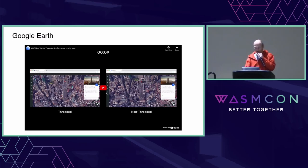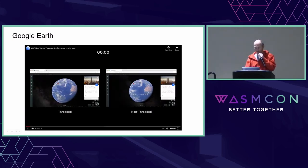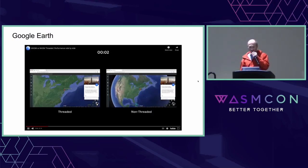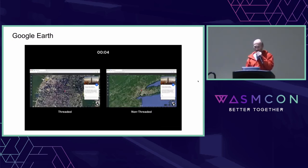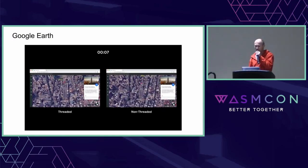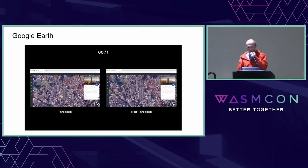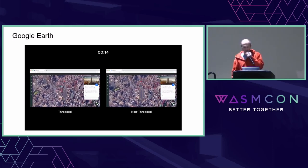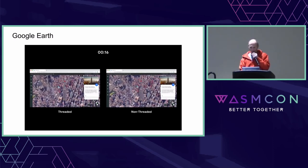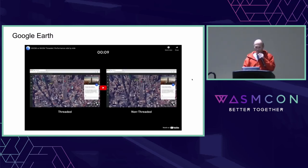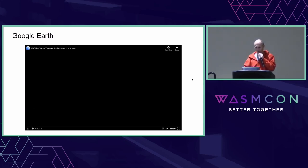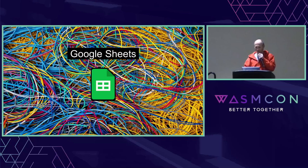A side-by-side comparison shows threaded on the left and non-threaded on the right. The threaded version works a lot better — the non-threaded one stutters and is slow with a bunch of dropped frames. So it's much less smooth than the threaded one. Google Earth was one of the first projects at Google ported at scale to WebAssembly.